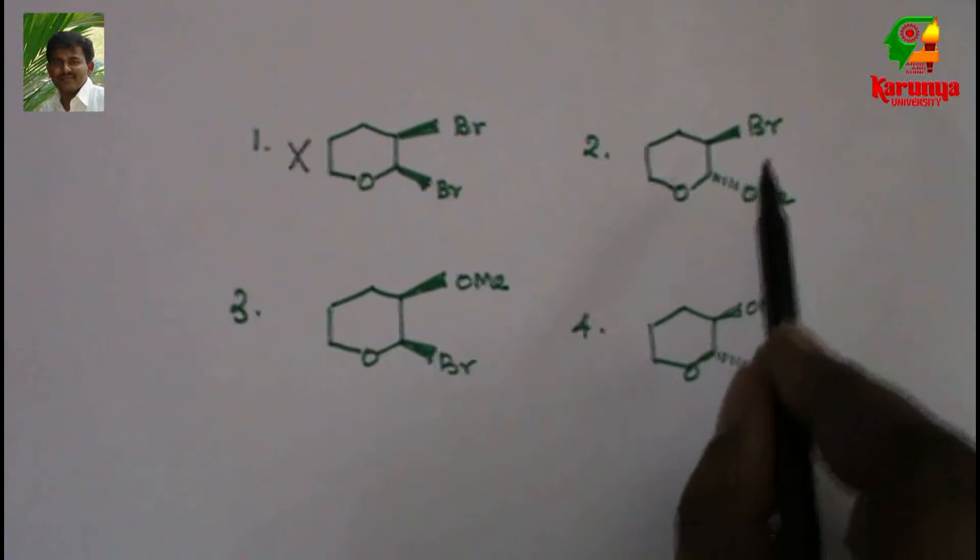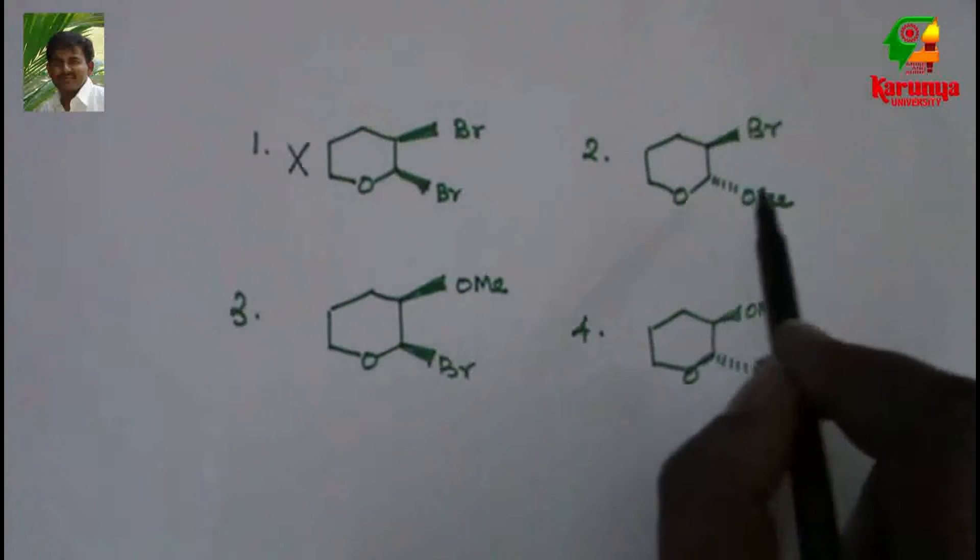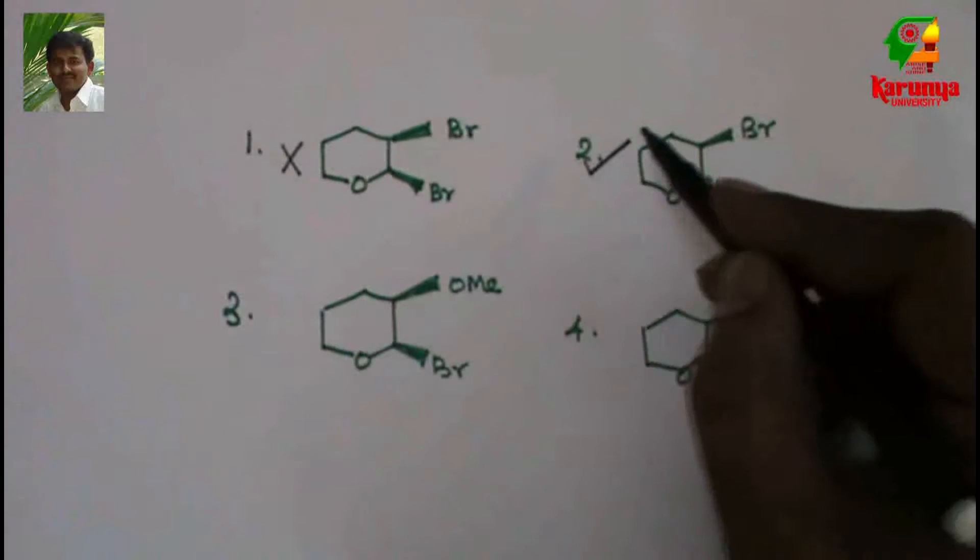Second one: OME and Br, they are trans. OME is attached to the carbon that has oxygen. So this is the answer.